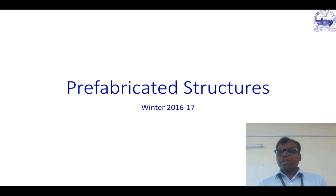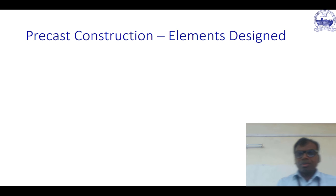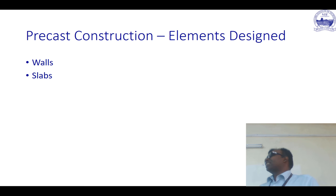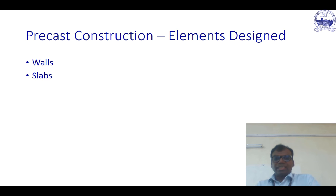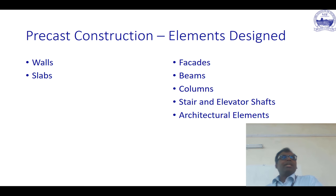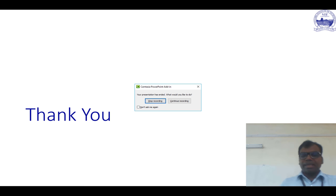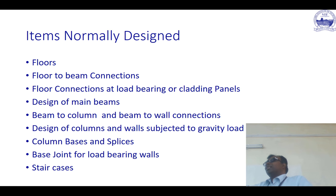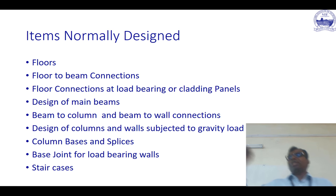We'll have a quick recap of what we did in the previous class. We saw elements that had been designed: walls and slabs — the solid kind, the hollow core, cast in-situ with a topping called a filigree slab, or sandwich panels. The walls may be load bearing or non-load bearing. These are some decorative elements and precast panels. We gave a long list for each type — composite floors, longitudinal joints between floor elements, column-to-column connections, beam-to-column connections, and so on.